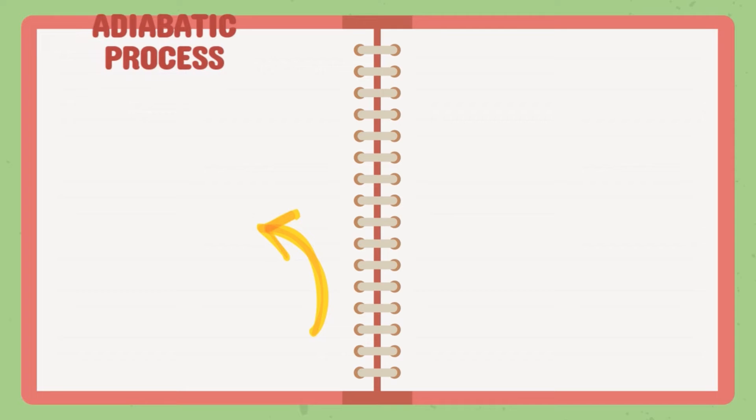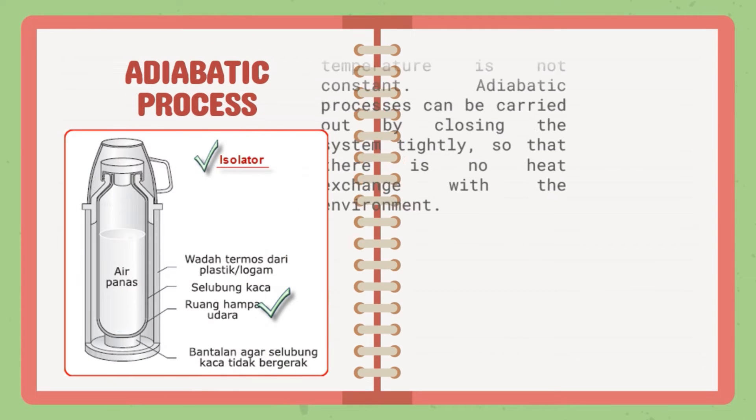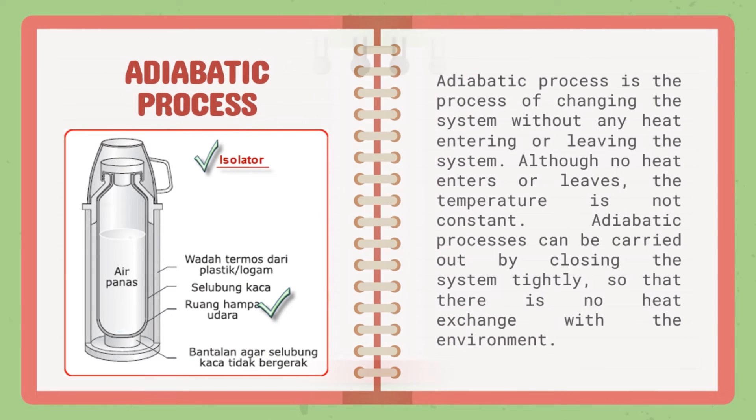At this time I will explain the adiabatic process. Adiabatic process is the process of changing the system without any heat entering or leaving the system. Although no heat enters or leaves, the temperature is not constant. Adiabatic processes can be carried out by closing the system tightly so that there is no heat exchange with the environment. An example of a device that can explain adiabatic processes is a thermos.